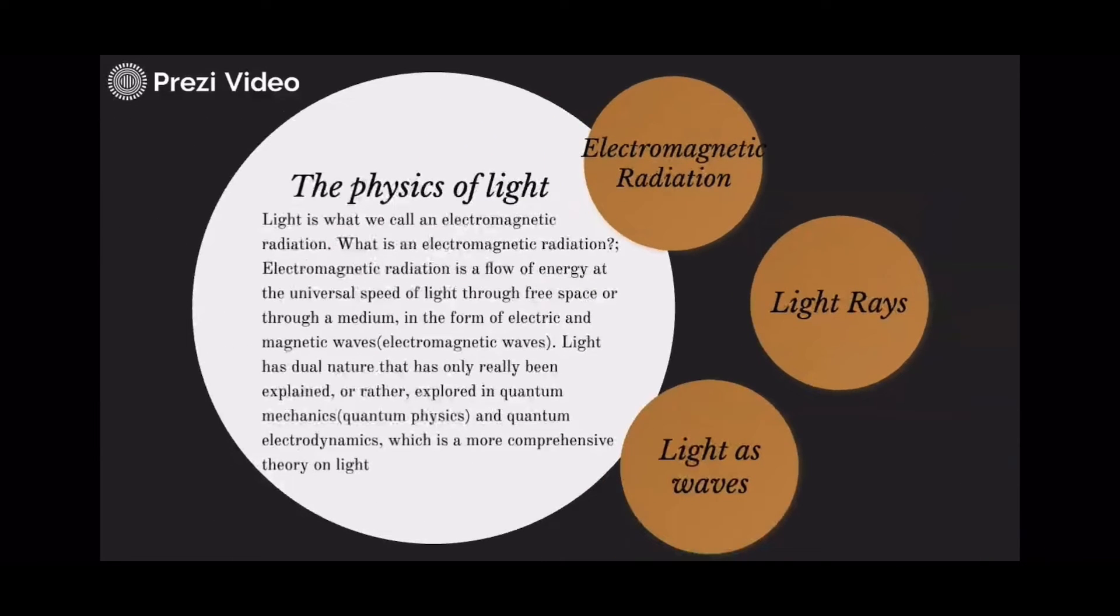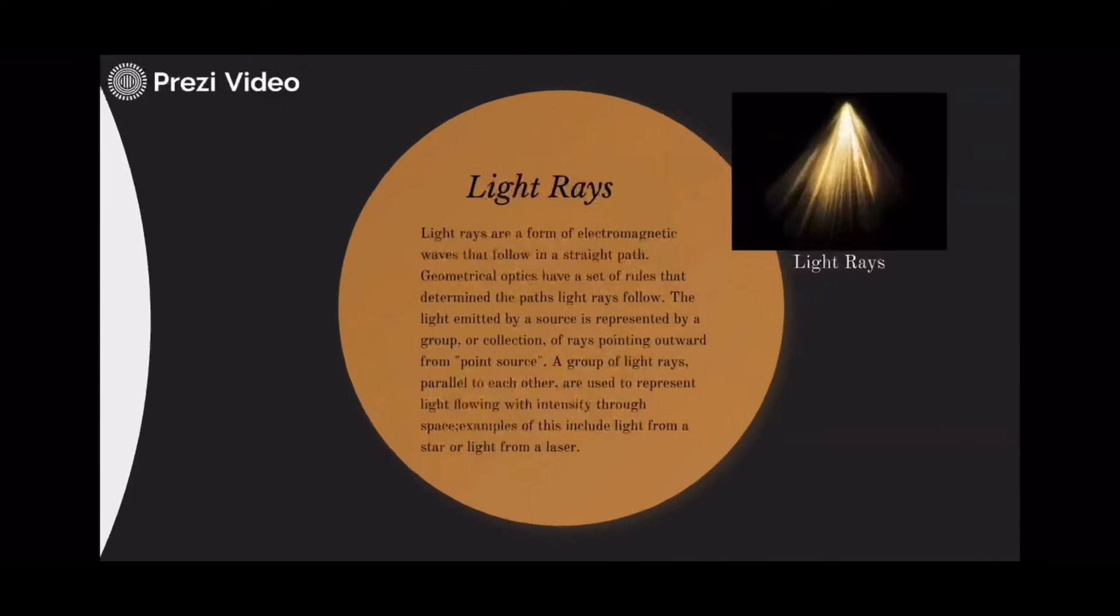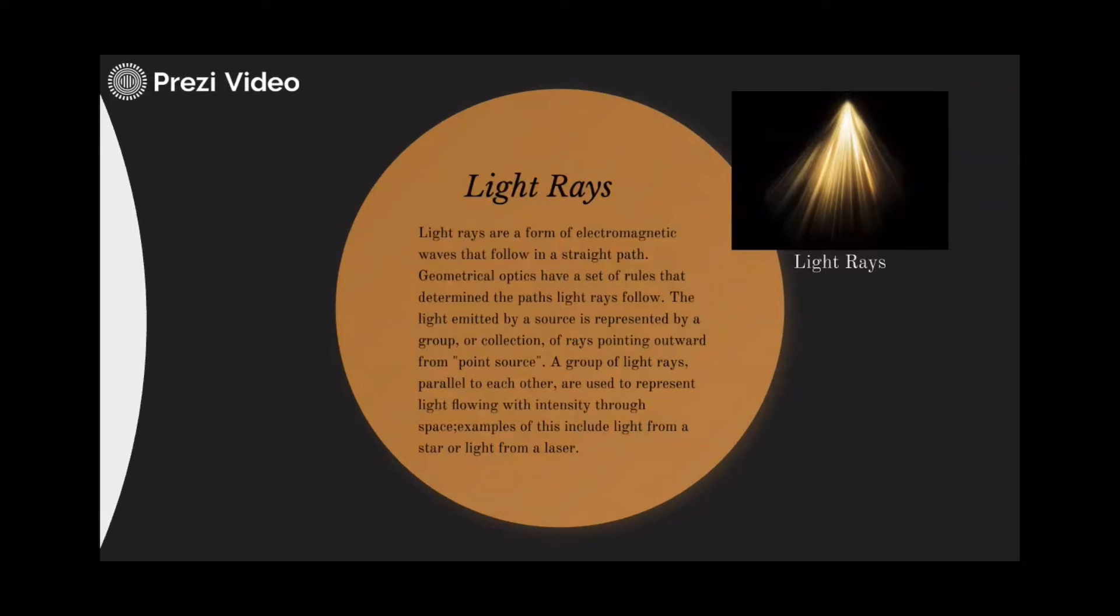Light rays are a form of electromagnetic waves that follow a straight path. Geometrical optics have a set of rules that determine the path light rays follow. The light emitted by a source is represented by a group or collection of rays pointing outward from a point source.